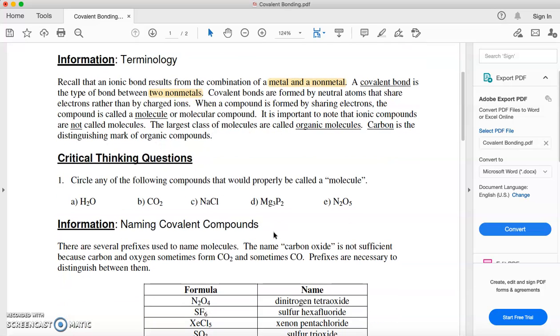So which ones would be called molecules here? Let's look. H2O: H and O, both non-metals, therefore this would be a molecule. Carbon and oxygen: non-metals, therefore this would be a molecule. NaCl: Na is a metal, therefore not a molecule. MgP2: Mg is a metal, therefore not a molecule. N2O: all non-metals, therefore it is a molecule. So as long as it's two non-metals, it's a molecule. Two or more.